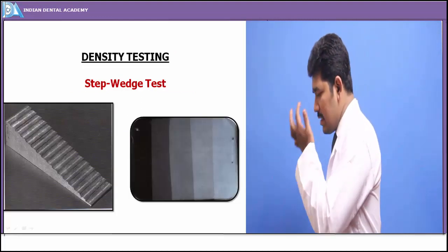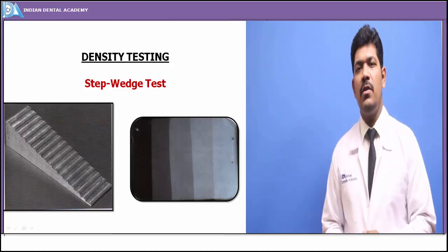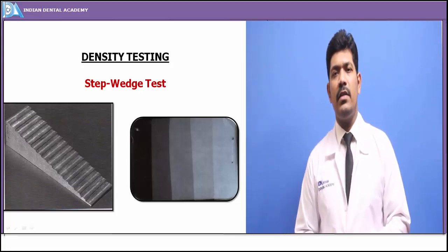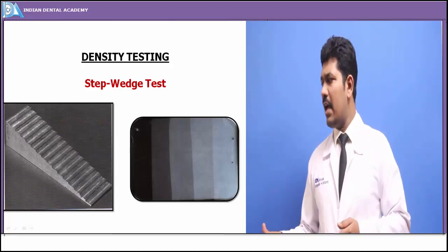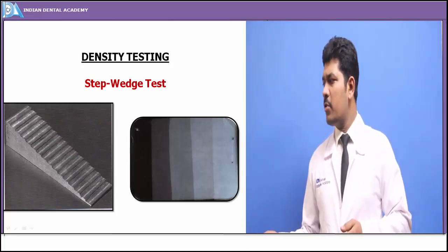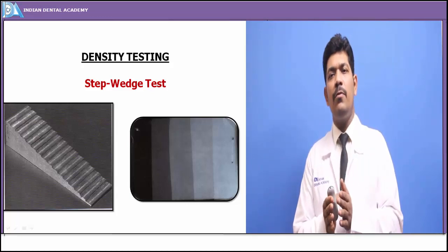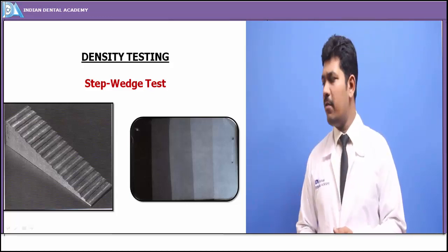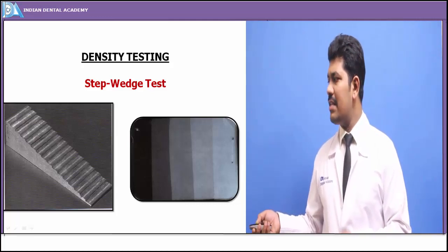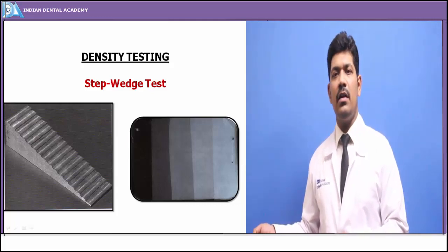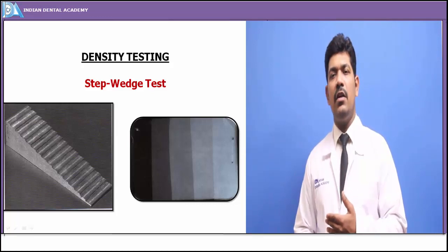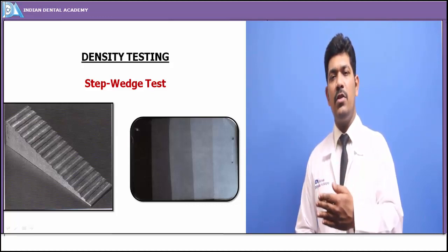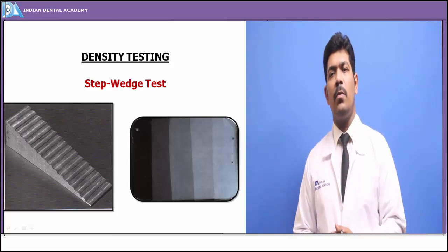For density testing, we normally use the step-wedge test, wherein a series of progressive lead foils are attached to each other. Progressively the amount of lead and attenuation is increased and then it is exposed onto a radiograph, which produces various degrees of darkening — showing us the amount of density needed to produce an optimal image.